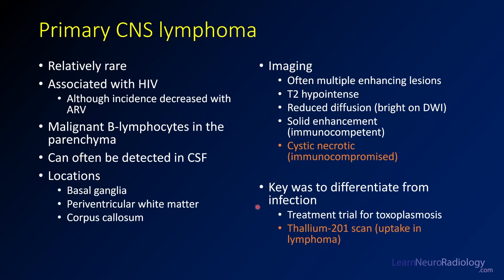This was the case of primary CNS lymphoma. This is a relatively rare disease, but it is associated with HIV and has a higher incidence in patients with HIV. The incidence has been decreasing with better antiretroviral therapies. CNS lymphoma is a collection of abnormal B lymphocytes in the parenchyma of the brain. They can often be detected in the CSF, so lumbar puncture and CSF analysis can help you work out the differential. The most common locations for CNS lymphoma are the basal ganglia, periventricular white matter, and corpus callosum.